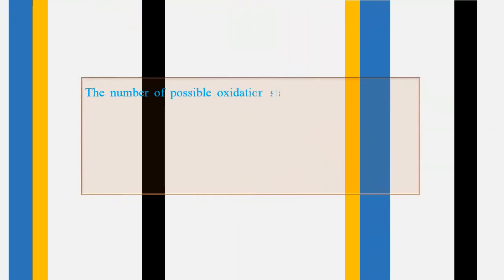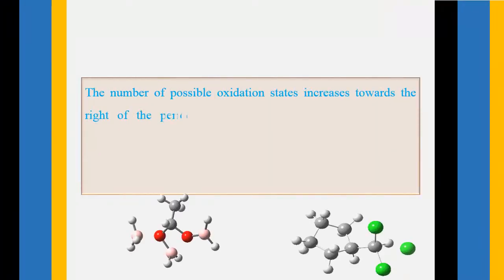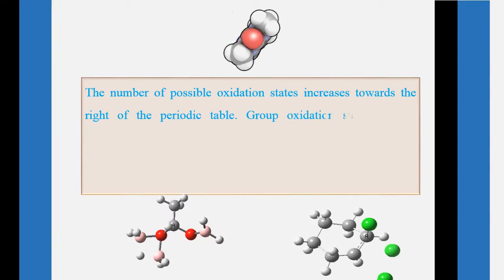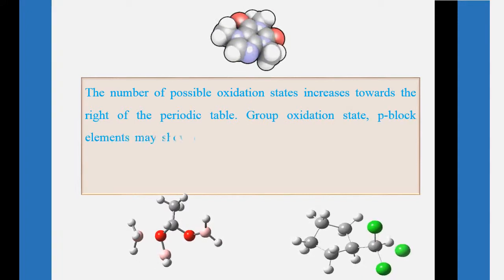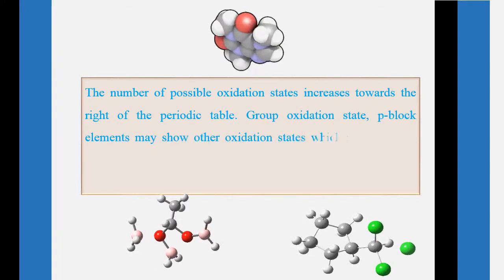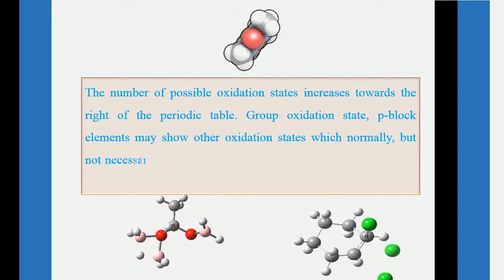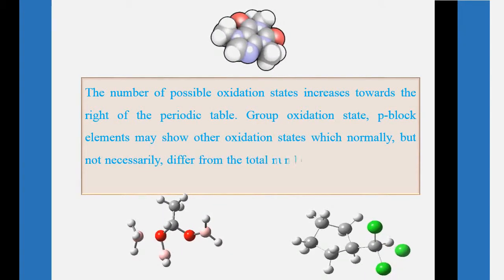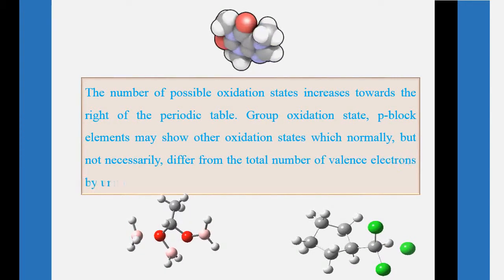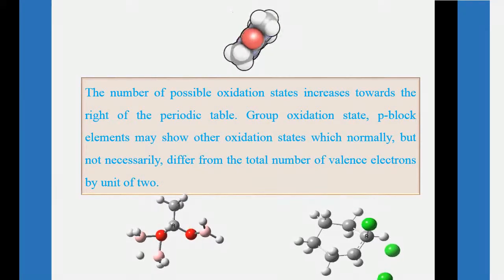The number of possible oxidation states increases towards the right of the periodic table. In addition to this so-called group oxidation state, P-Block Elements may show other oxidation states which normally, but not necessarily, differ from the total number of valence electrons by unit of 2.